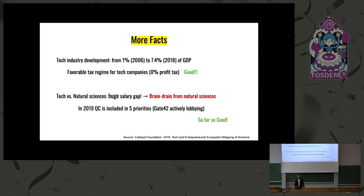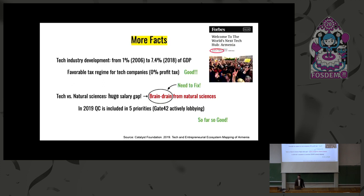So some more facts and then I will go to the projects. The tech industry in Armenia is really thriving. And from 2006 to 2018, the GDP was from 1 to 7.4 percent. And favorable tax regime for tech companies. If you want to build a company in Armenia, that's a good thing. But from natural sciences viewpoint, it's a really kind of disaster, a very big salary gap. People from natural sciences, once they finish their bachelor's, they go outside. So brain drain happens. So we need to fix this. Just yesterday, Forbes said that welcome to the world's next tech hub. So I hope this becomes true for Armenia.